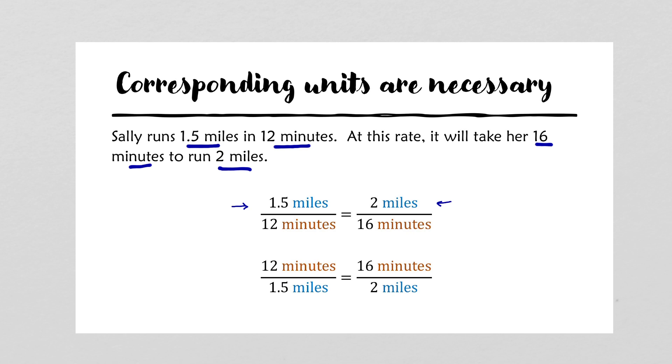We could also set up a proportion at the bottom, which says that we have 12 minutes corresponding to 1.5 miles, in the same fashion as 16 minutes corresponds to 2 miles. What's important here is to note that as long as minutes are on top on one side, minutes must also be on top on the other side.